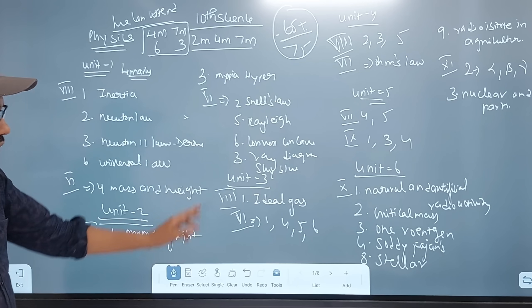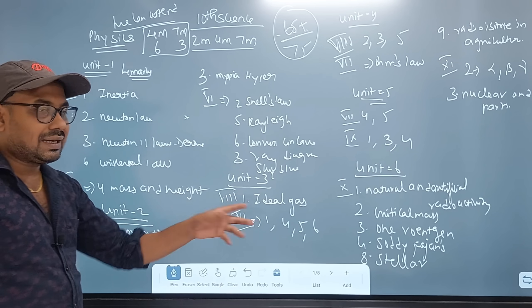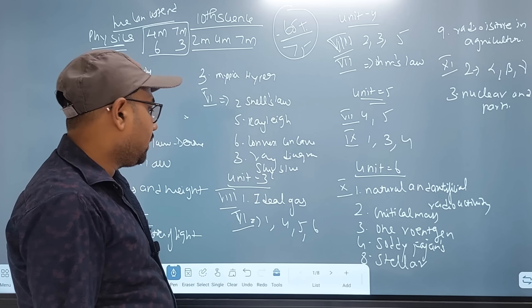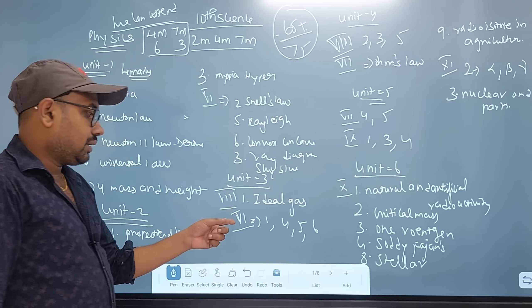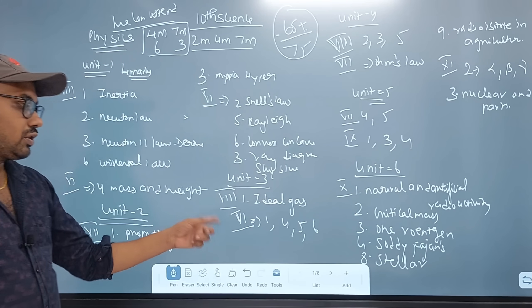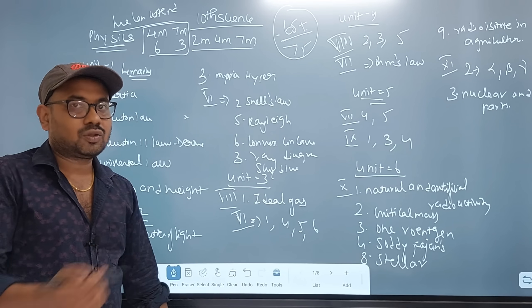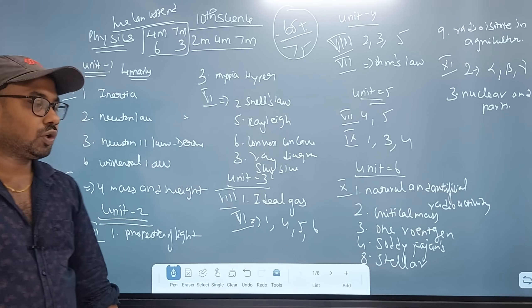Unit 3: Roman number 8 — Ideal Gas Equation. Roman number 6 question 1456. 2 marks A and B are important.